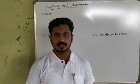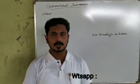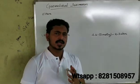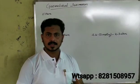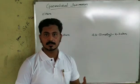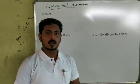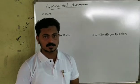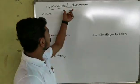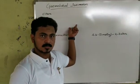Plus 1 chemistry, chapter number 13, hydrocarbon chapter. Geometrical Isomerism is a very important part of organic chemistry. Isomerism can be broadly classified into Structural Isomerism and Stereo Isomerism. Stereo Isomerism includes Geometrical Isomerism and Optical Isomerism.